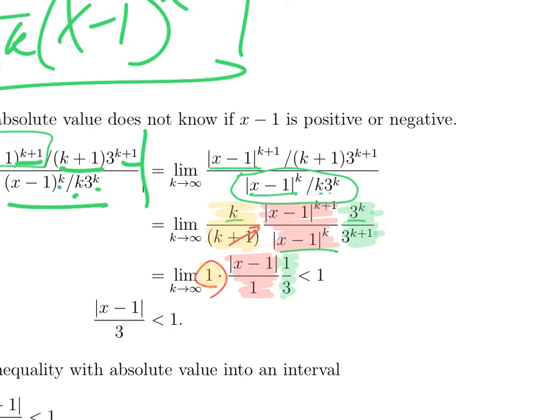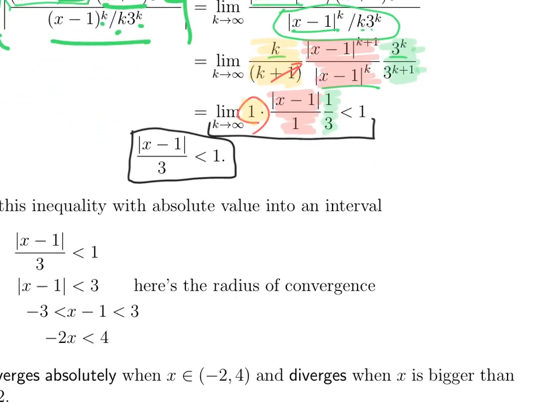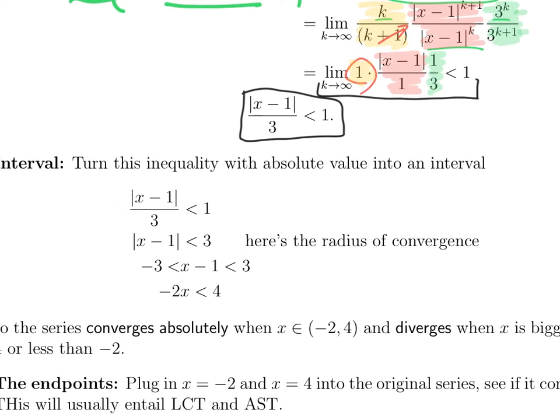So, now, remember the ratio test says that this converges absolutely if this quantity, this limit, is less than 1. And it's going to diverge if it's greater than 1. What is this quantity? It is absolute value of x minus 1 over 3. The series is going to converge whenever that's less than 1, and diverge whenever it's greater than 1. And in between is what we don't know. So, that's easy to work with.